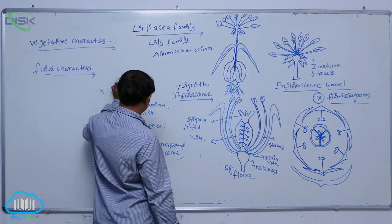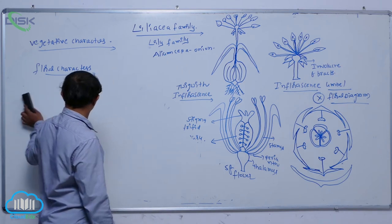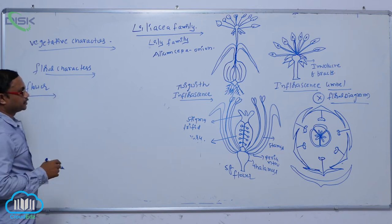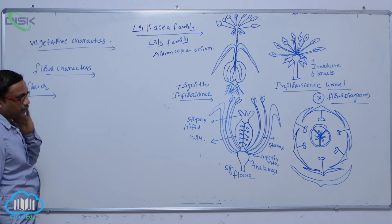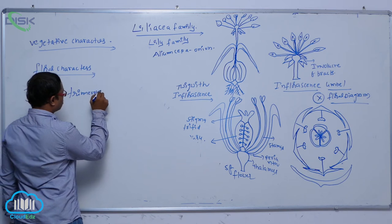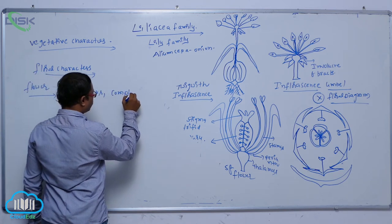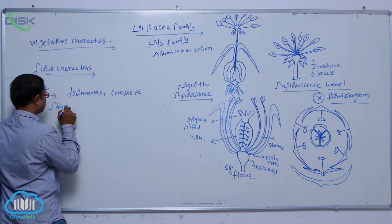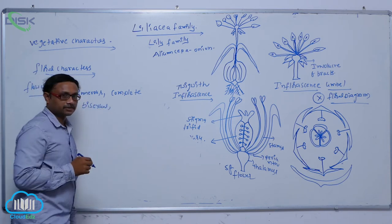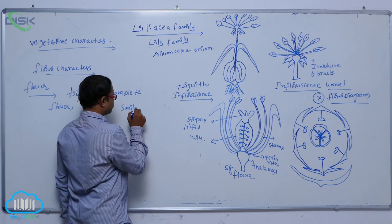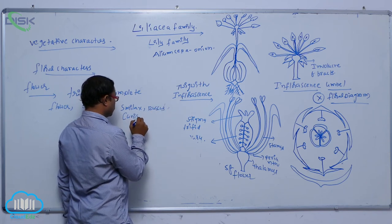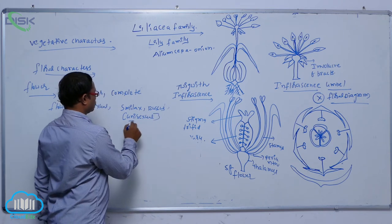After inflorescence, we look at the flower. Generally, these plants belong to monocotyledonous plants, so the flowers are trimerous and complete. They are bisexual flowers, but some are unisexual — smilax and ruscus are both unisexual.